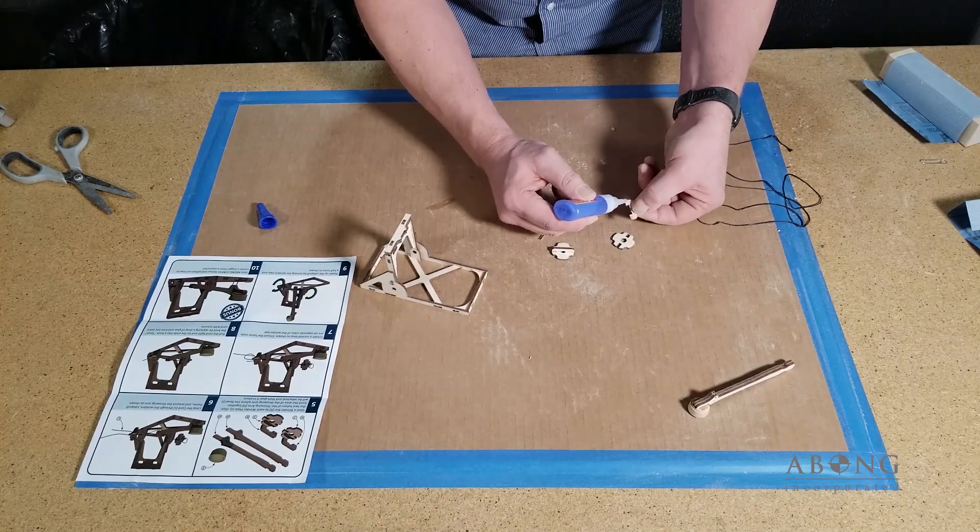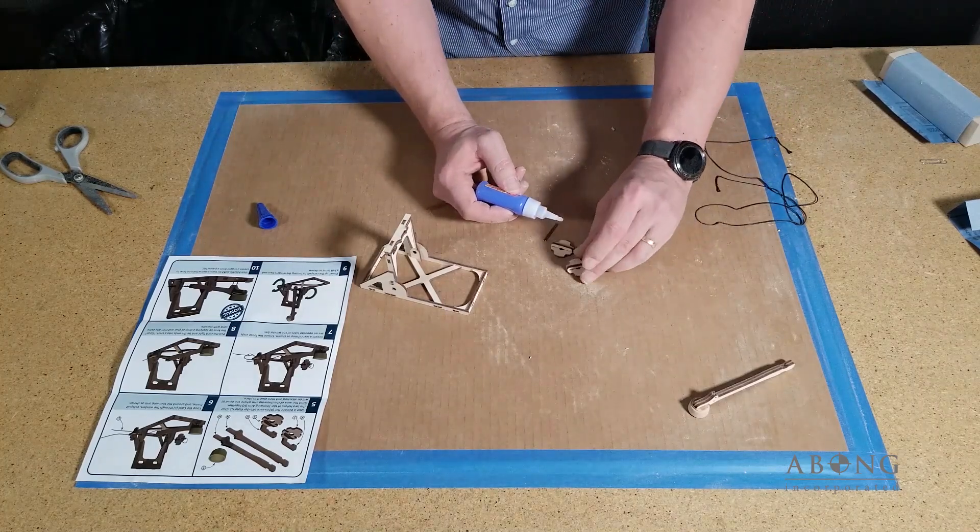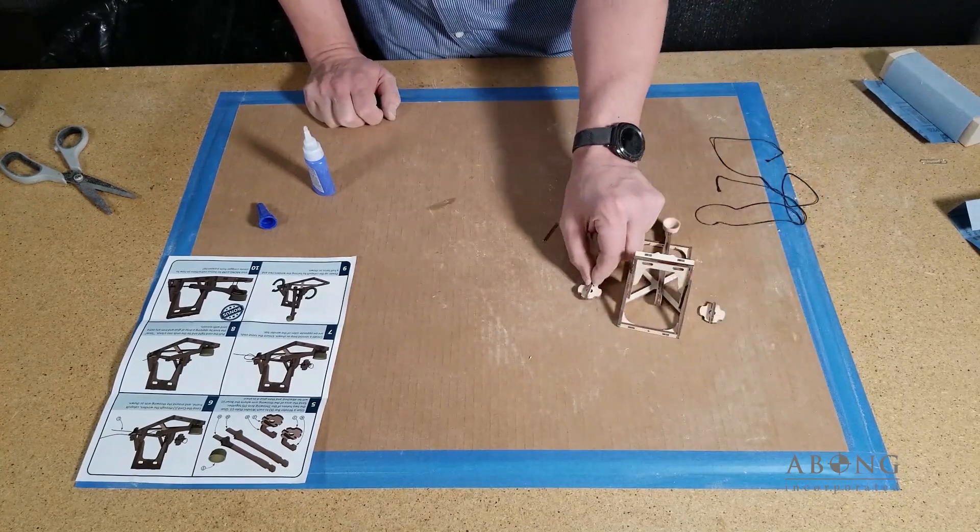So a little bit of glue on both sides. There we go. Piece in place. And now we have everything ready to go ahead and actually assemble the catapult.